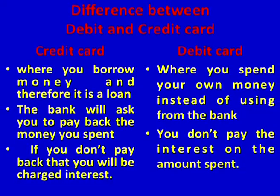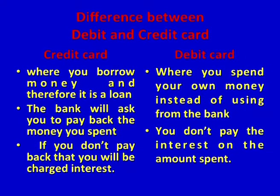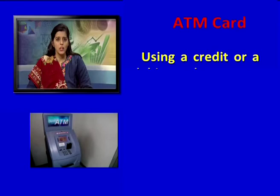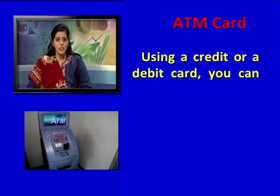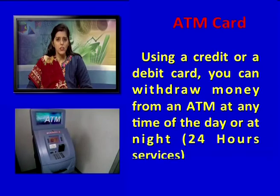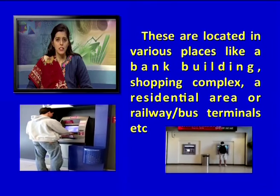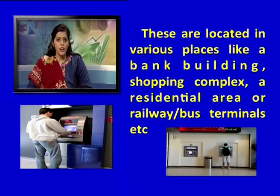Difference between debit and credit card: with a credit card you borrow money, therefore it is a loan — the bank will ask you to pay back the money you spent, and if you don't pay back you will be charged interest. With a debit card you spend your own money, so you don't pay interest on the amount spent. ATM card: using a credit or debit card, you can withdraw money from an ATM at any time of the day or night — 24-hour service. ATMs are located in various places like bank buildings, shopping complexes, residential areas, and railway or bus terminals.